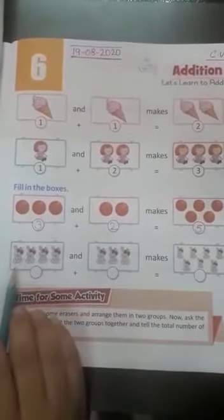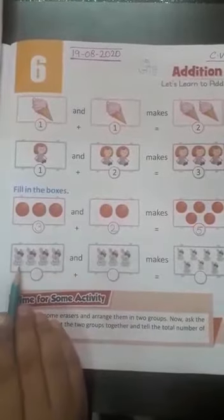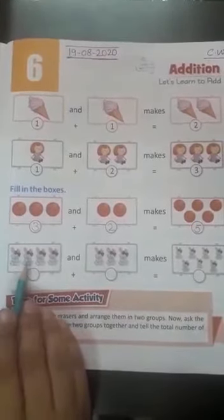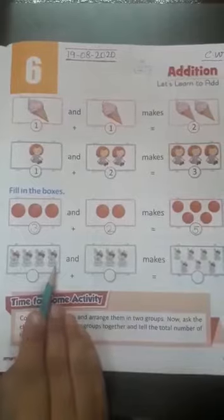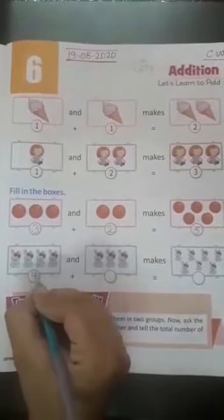Next, how many rabbits are there? One, two, three, four. So we write here 4.